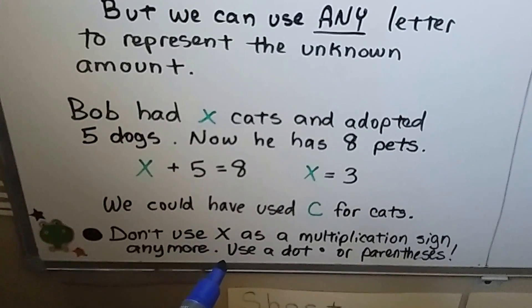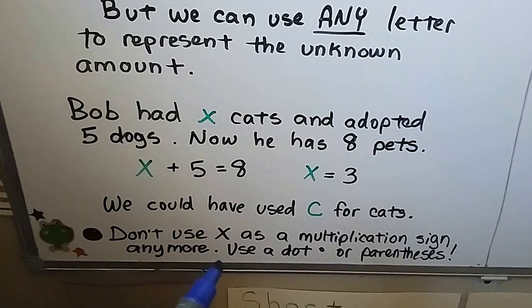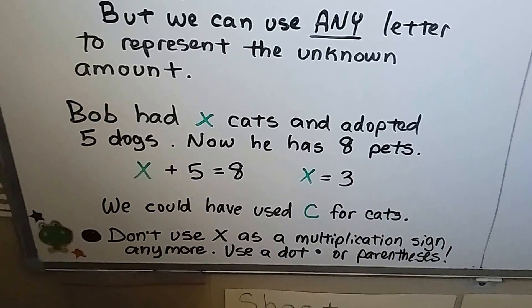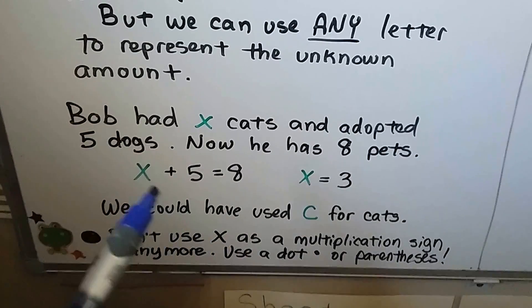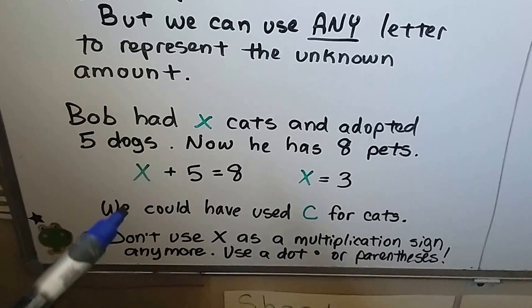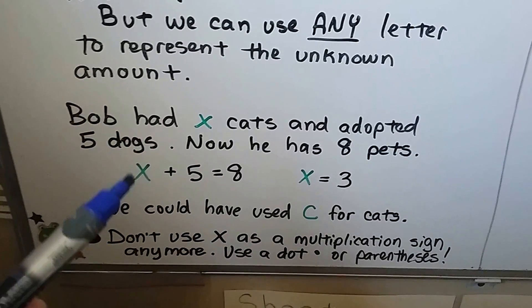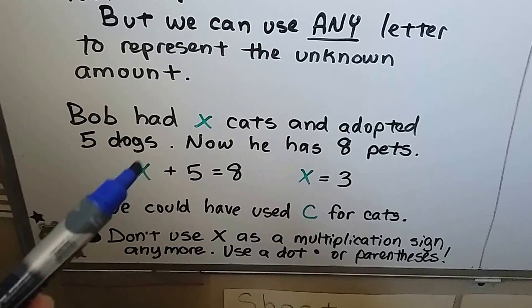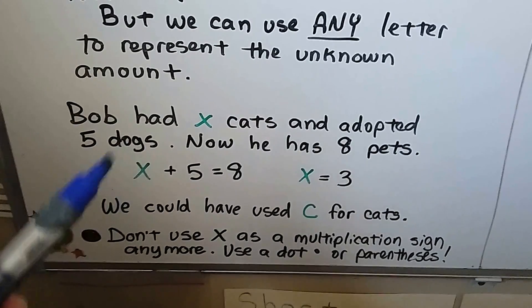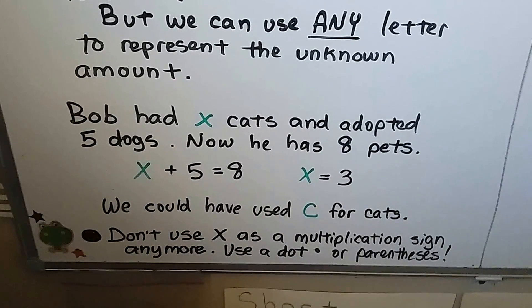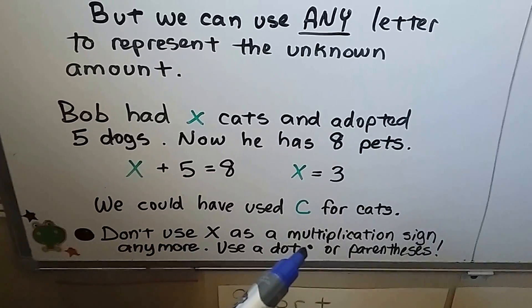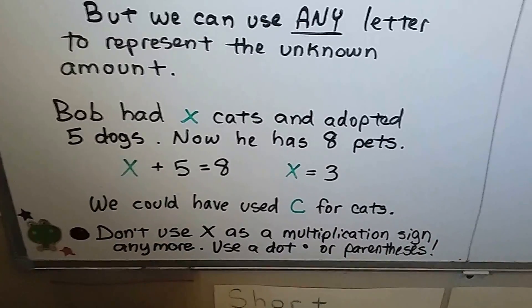Don't use x as a multiplication sign anymore — we're going to use a dot or parentheses. That x for multiplication is for little kids, because if you have a variable x, you'll get it confused with the multiplication sign. Now that we're in algebra, you have to use a dot or parentheses to mean multiply.